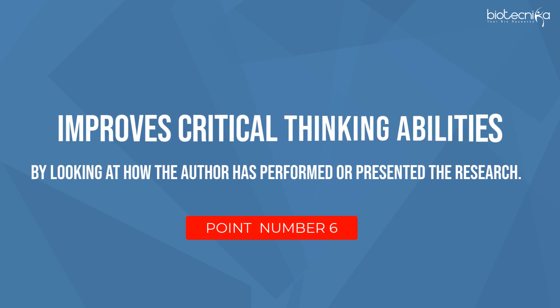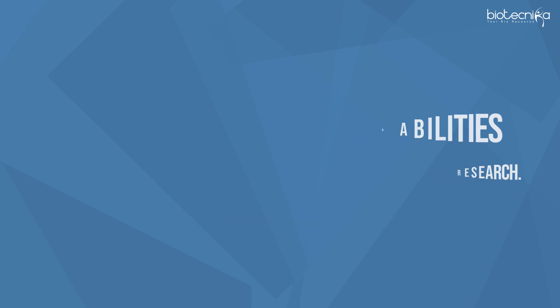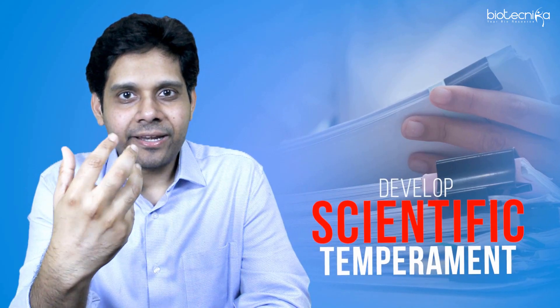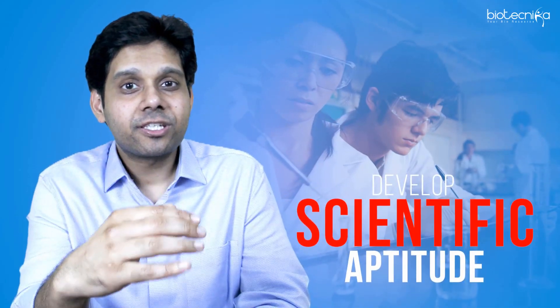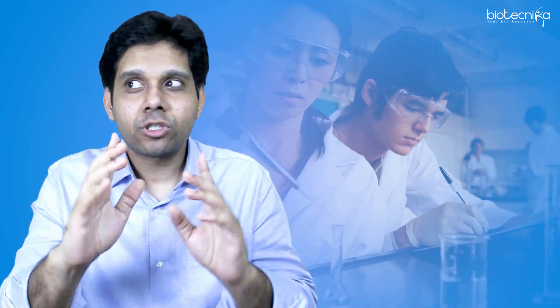Number six: improves critical thinking abilities by looking at how the author has performed or presented the experiment or research. When you actually read the research paper, you get an idea about it. Neurons that wire together fire together. When you read research papers, you develop a scientific temperament and scientific aptitude, which is built on the experimental approaches of other people.